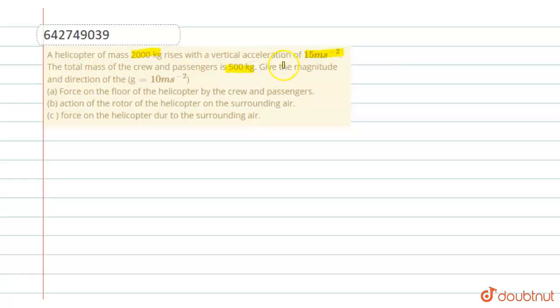The total mass of the crew and passengers is 500 kg. Give the magnitude and direction of: (a) the force on the floor of the helicopter by crew and passengers, (b) action of the rotor of the helicopter on the surrounding air, (c) force on the helicopter due to the surrounding air.